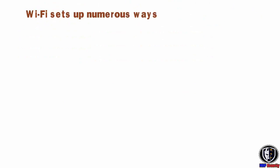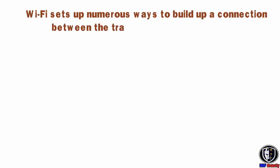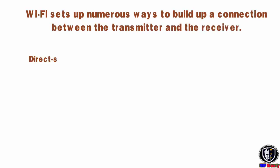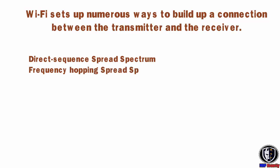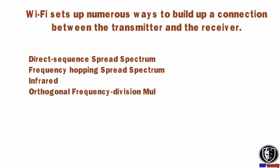Wi-Fi sets up numerous ways to build up a connection between the transmitter and the receiver, such as direct sequence spread spectrum, frequency hopping spread spectrum, infrared, and orthogonal frequency division multiplexing.